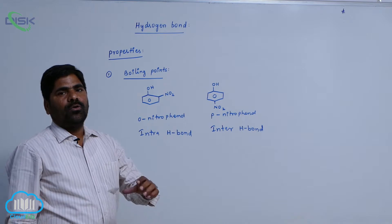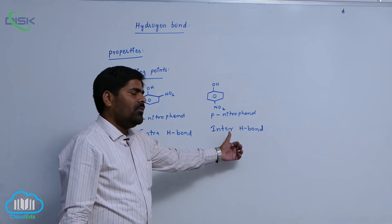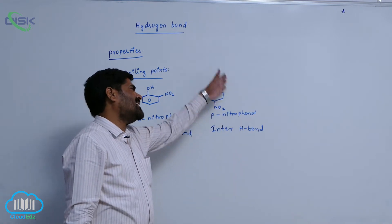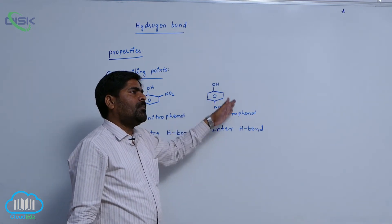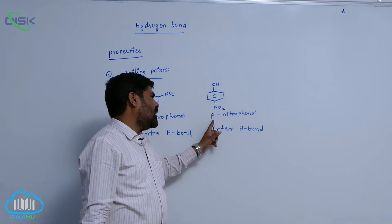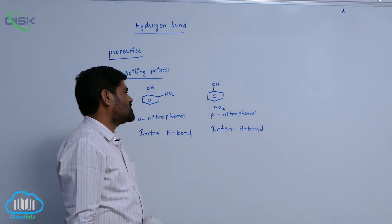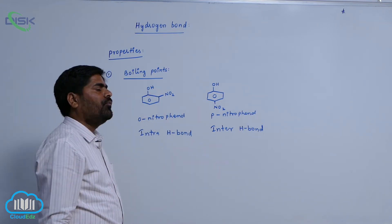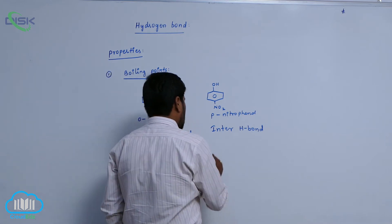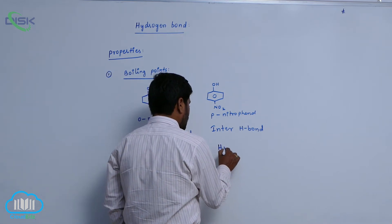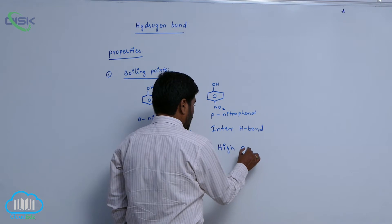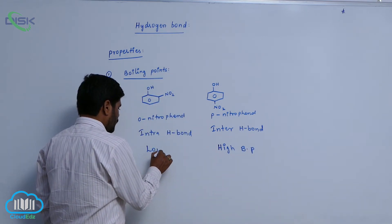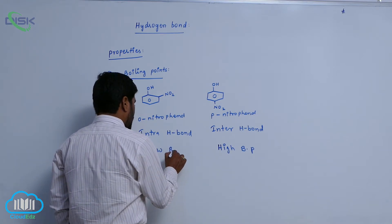So due to this, to break this particular bond, we can supply more amount of energy. That is the reason why intermolecular hydrogen bond-containing para-nitrophenol has a higher boiling point compared to ortho-nitrophenol. Para-nitrophenol has a high boiling point, while ortho-nitrophenol has a low boiling point.